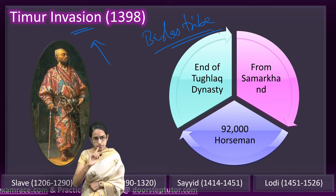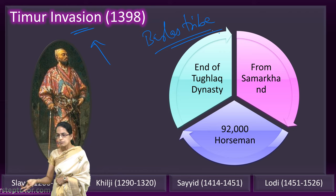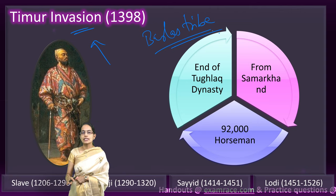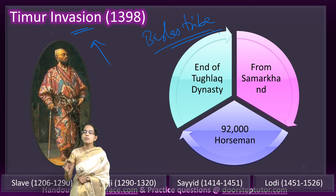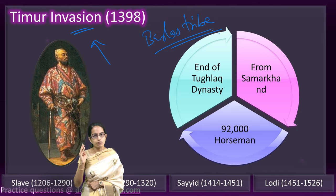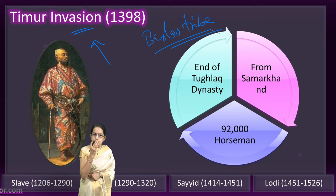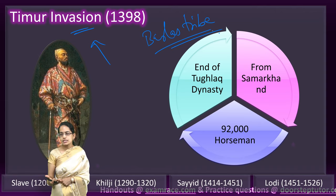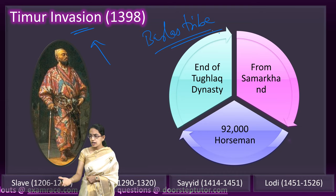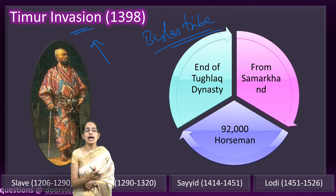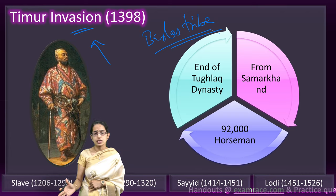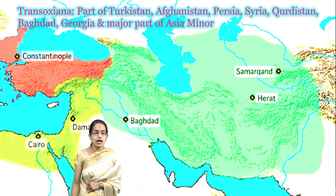On his way back, Timur still looted the regions of Meerut, Haridwar, Kangra, and Jammu. Before leaving India, he appointed Khizr Khan as governor of Multan, Lahore, and Dipalpur. Khizr Khan was later the one who established the Sayyid dynasty in India. During Timur's invasion, child marriage in Hindu practices increased because families sought to marry their daughters early to protect them. Timur was building his vast empire in Samarkand, also known as Transoxiana, which included parts of Afghanistan, Persia, Syria, Kurdistan, Baghdad, Georgia, and Asia Minor.